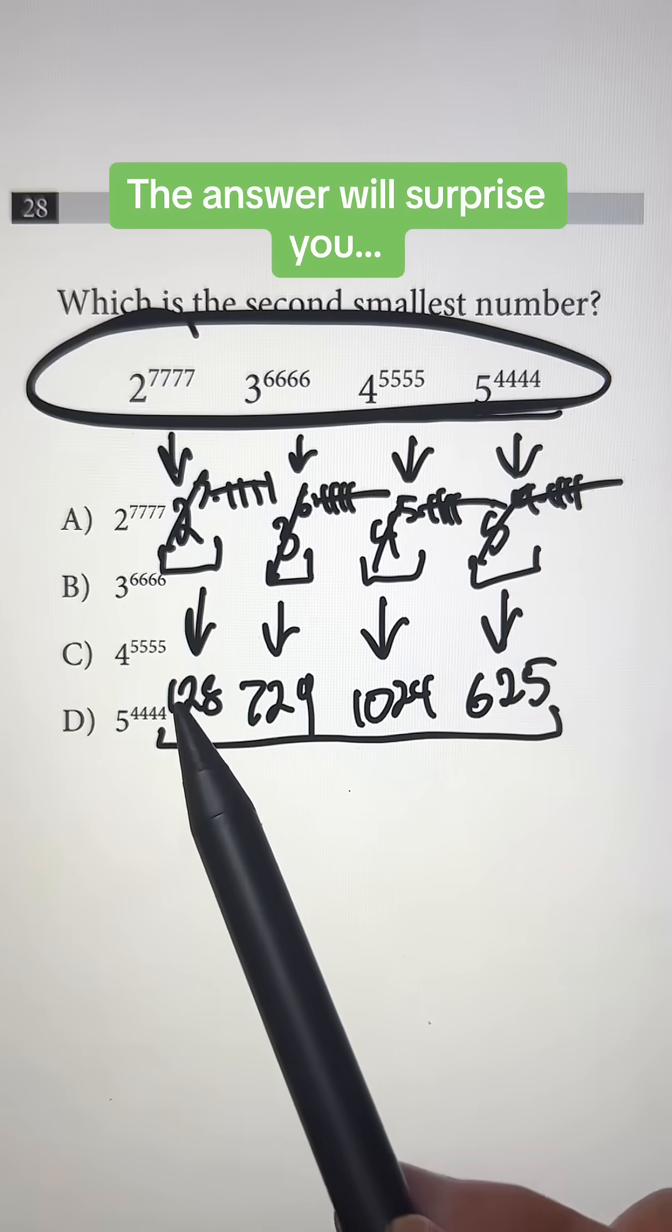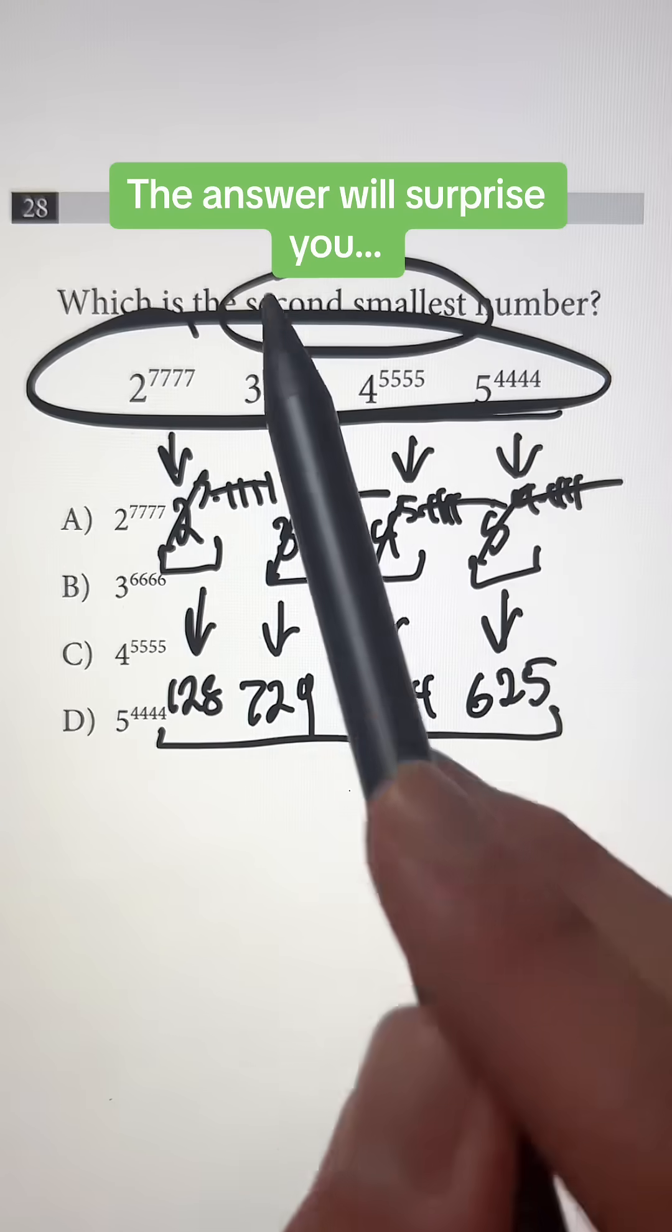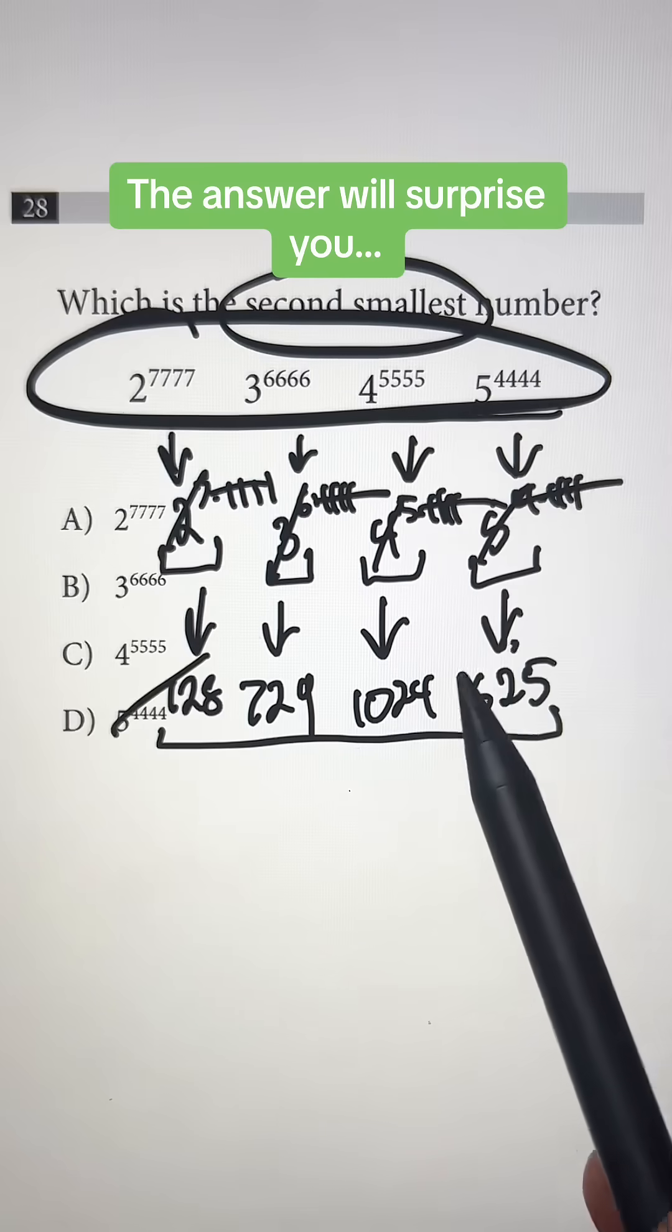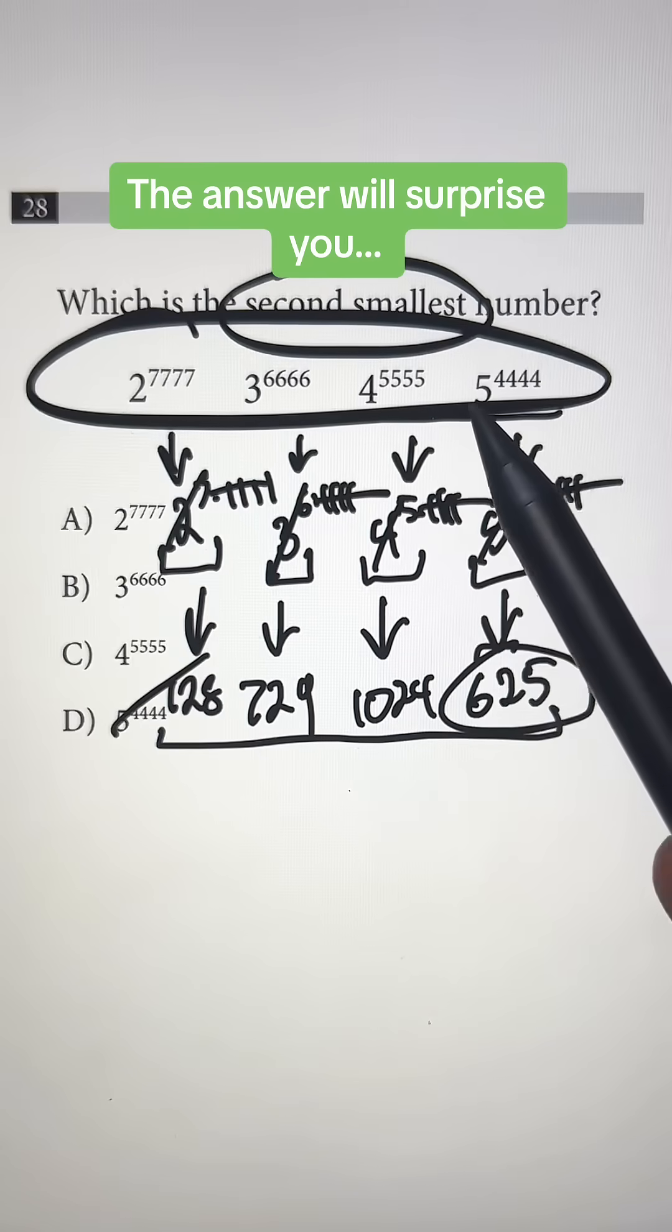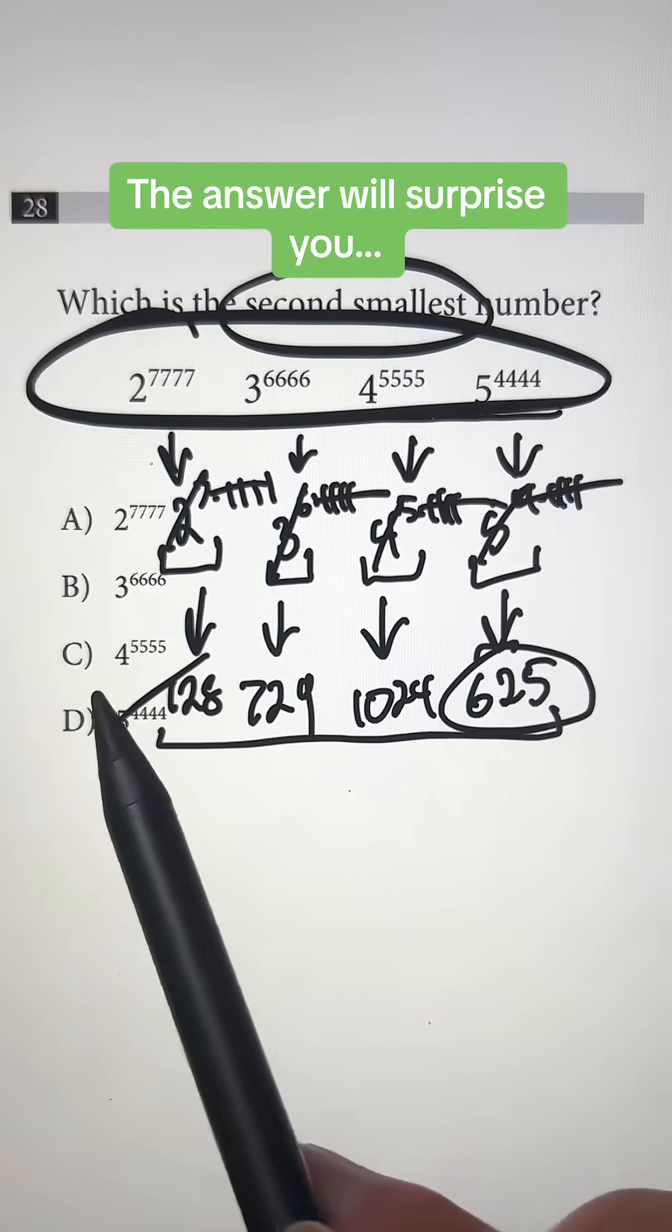Now the smallest one is going to be 128 but that's not what we're looking for since we want the second smallest number. The second smallest one here is going to be 625 which is correlated with 5 to the 4,444 power. So that's going to be answer choice D.